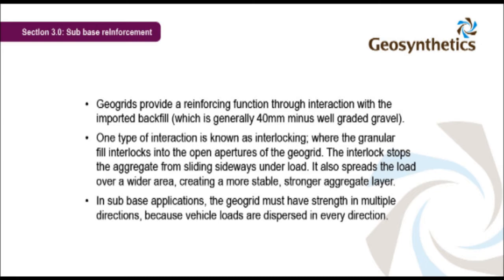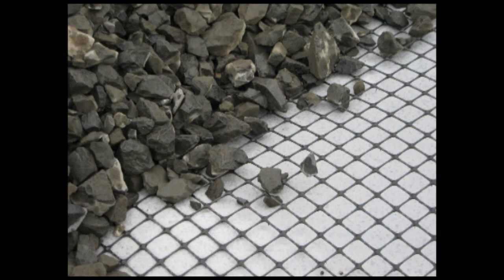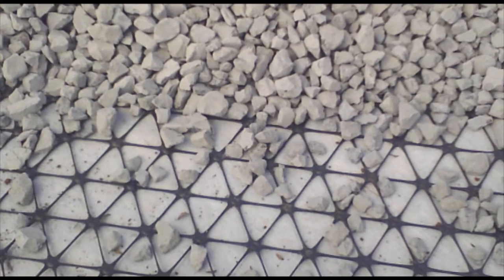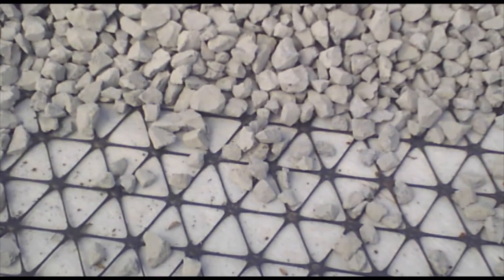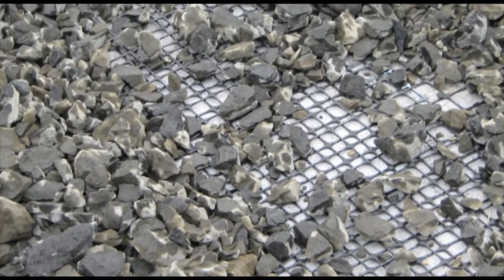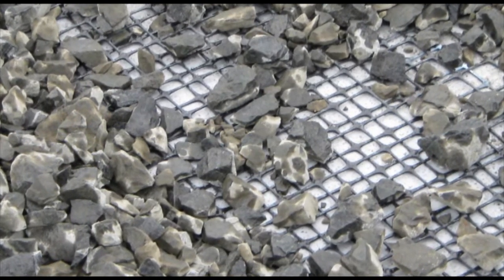In sub-base applications, the geogrid must have strength in multiple directions because vehicle loads are dispersed in every direction. Geogrids have open apertures. When aggregate is placed on top, it interlocks with the geogrid's apertures, helping to control the lateral movement of aggregate — stopping it from sliding sideways and making the whole formation stronger. This mechanically stabilised layer spreads the load over a wider area, so the road design requires less paving thickness to achieve the same performance. It also reduces differential settlement.